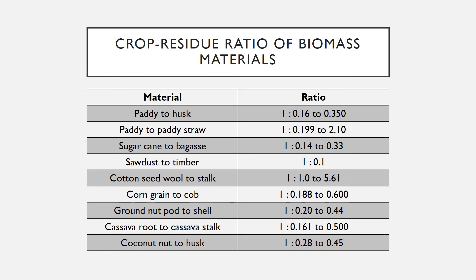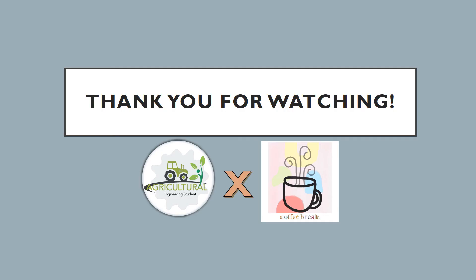Cotton seed wool to stock: 1 to 1.0–5.61. Corn grain to cob: 1 to 0.188–0.600. Groundnut pod to shell: 1 to 0.20–0.44. Cassava root to cassava stock: 1 to 0.161–0.500. Coconut nut to husk: 1 to 0.28–0.45.